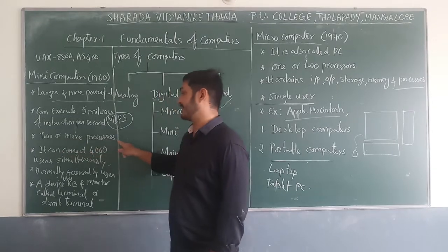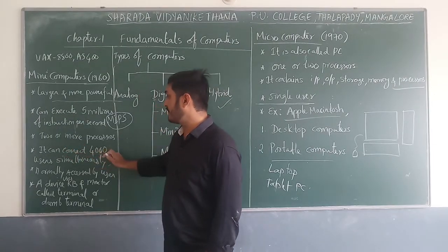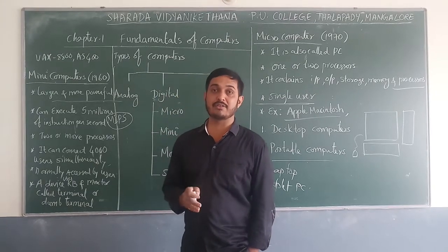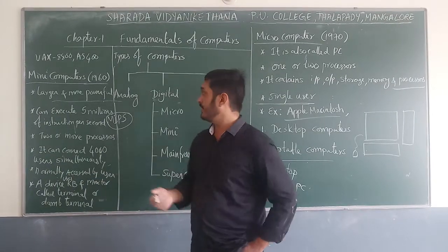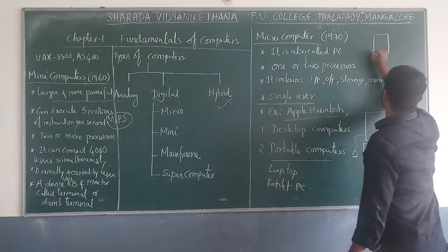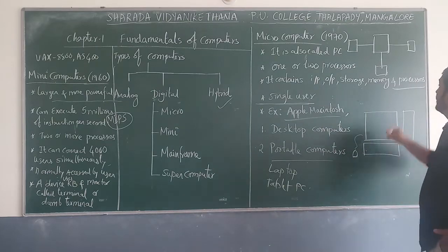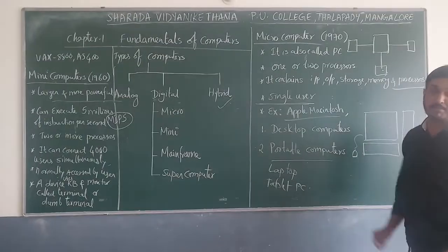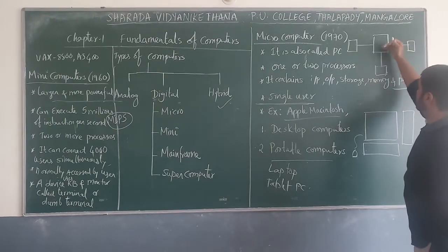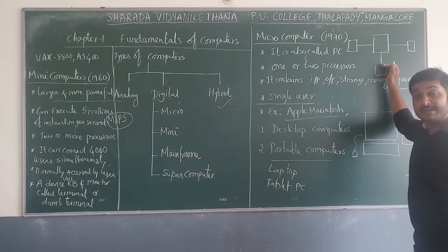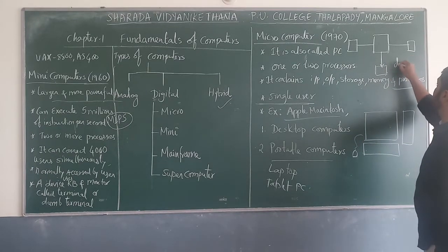Mini computers use two or more processors and can connect up to four thousand users simultaneously. Users access the mini computer through terminals — devices that have only an input unit and display unit with no independent processing power. These are called dumb terminals, because they rely on the mini computer's processor.